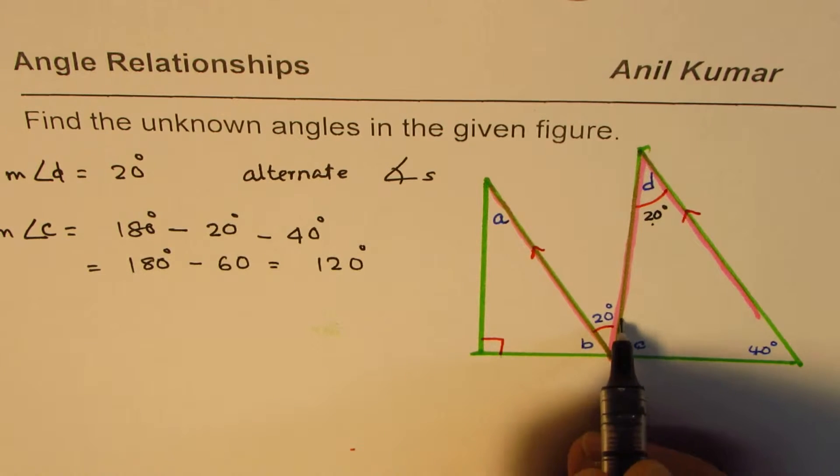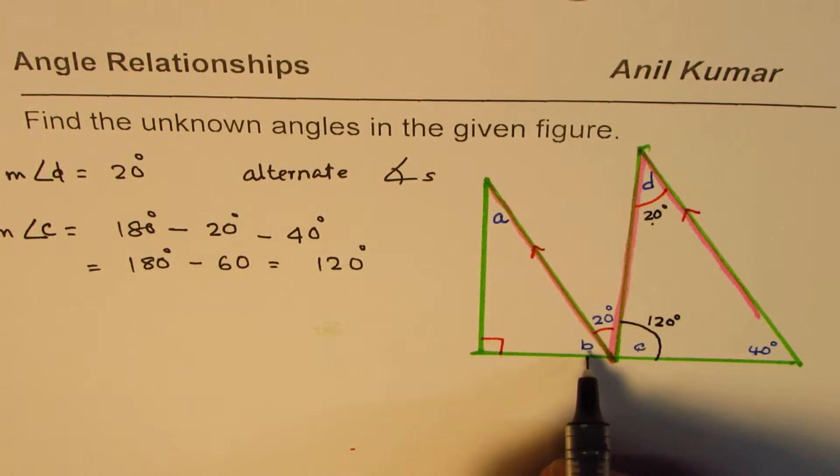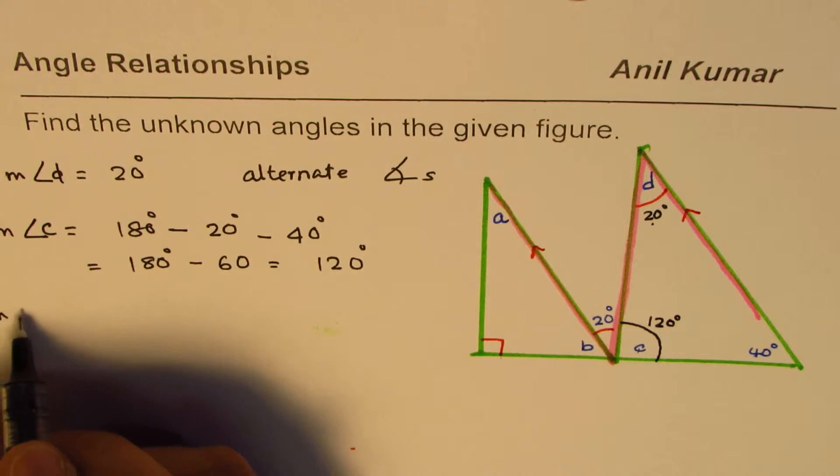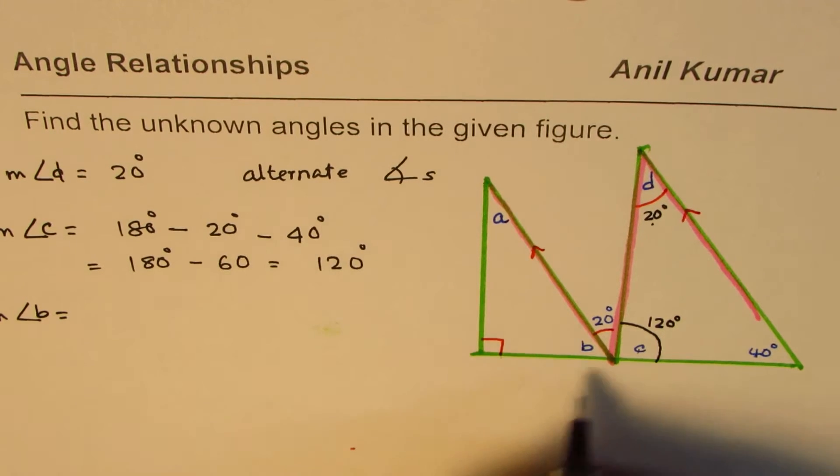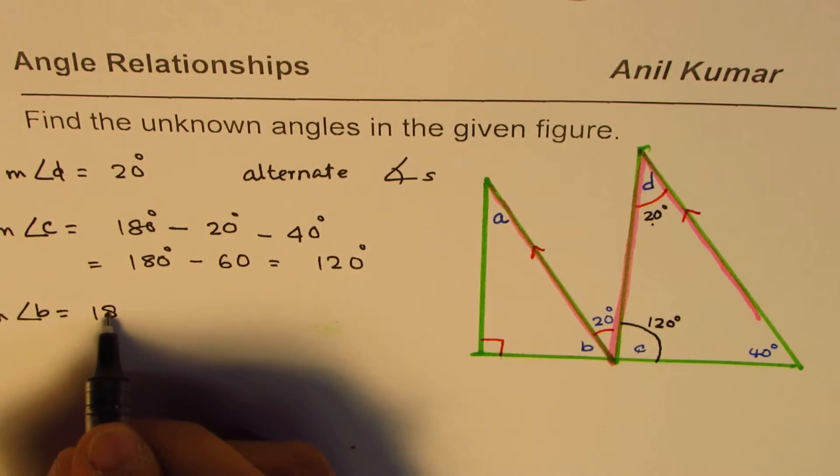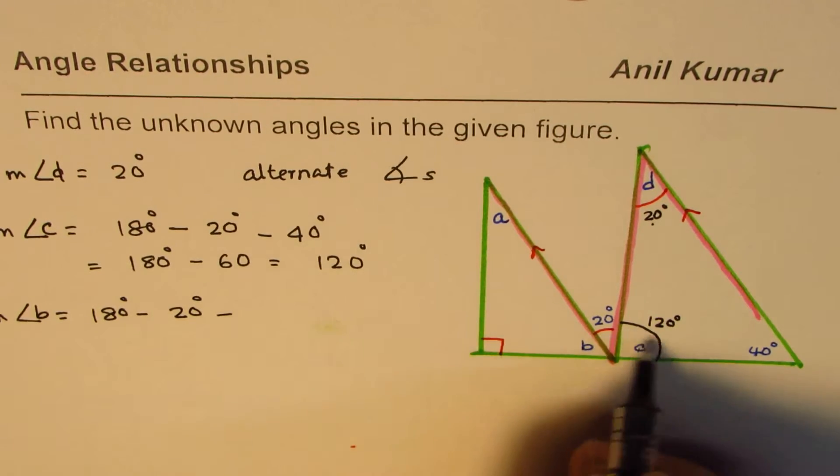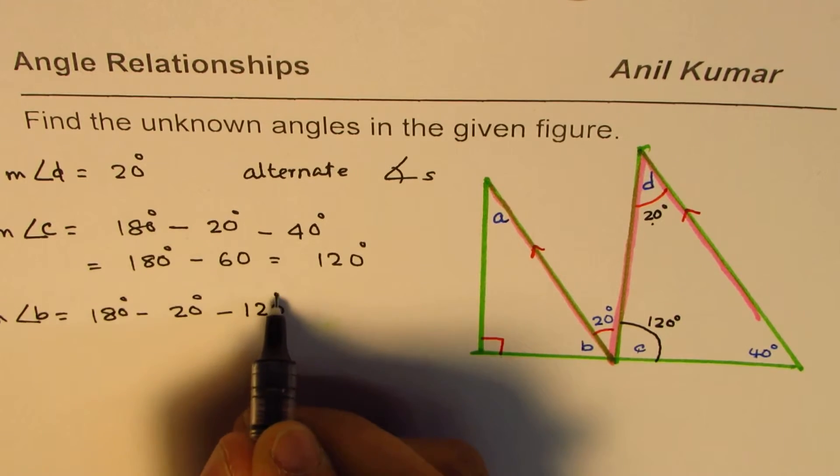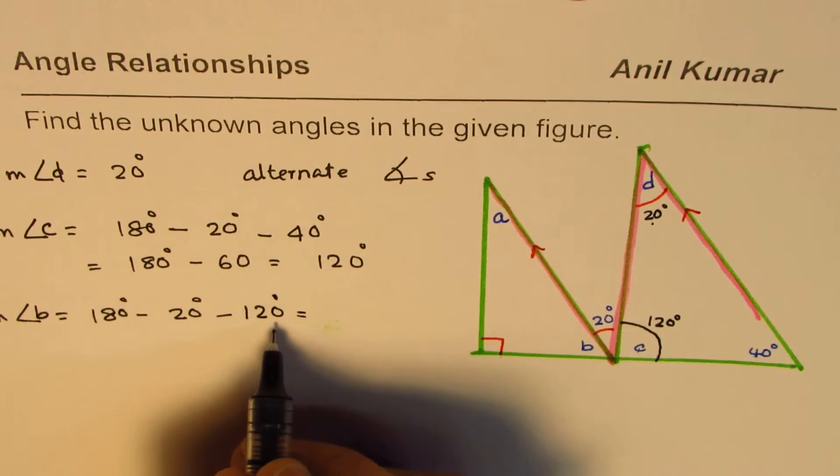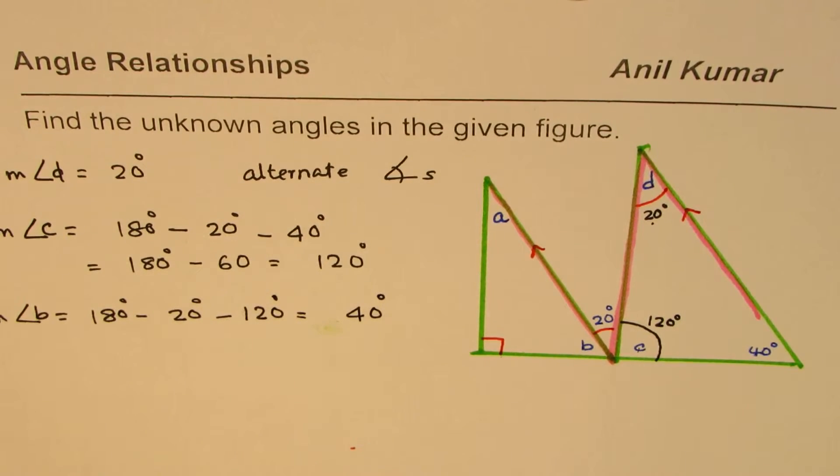Once we know that C is 120 degrees, we can find B. The measurement of angle B forms a linear pair. So it is 180 degrees, take away 20, take away 120. That is, you're taking away 140 from it, leaving you with 40 degrees. So angle B is 40 degrees.